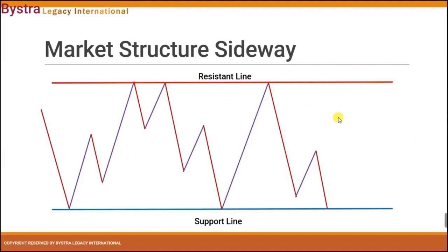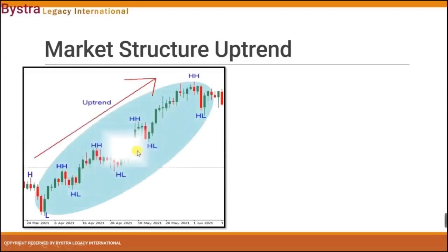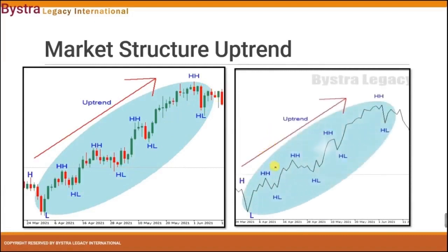Now let's look at an example on the MT4 chart. On the market structure uptrend, you can see it creates a high, low, higher high, higher low, higher high, higher low — same goes on, doing the same structure. Now if you change it to the line chart, you can see even clearer. So this is your high, this is your low, your higher high, higher low, higher high, higher low, and it continues. So the uptrend will only have this structure: high, low, higher high, and higher low.